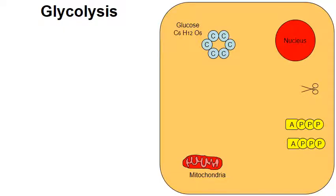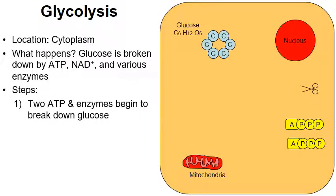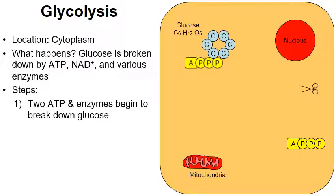Let's start by breaking down glycolysis. This is the chemical process that starts in the cytoplasm, where a molecule of glucose gets broken down by molecules of ATP, NAD, and a variety of enzymes. For simplicity, I've drawn glucose as six blue C's arranged in a hexagon formation. In reality there are also 12 hydrogens and six oxygens, but for simplicity I've only drawn the six carbons. Two molecules of ATP are going to begin to break down that glucose with the help of various enzymes.